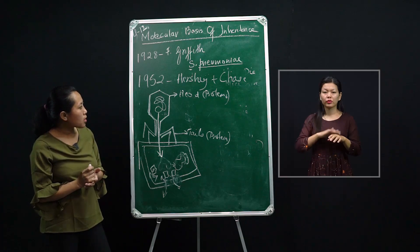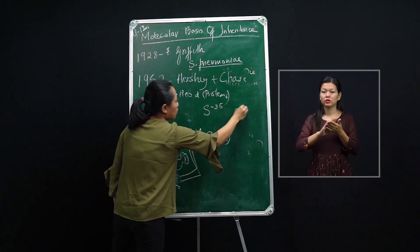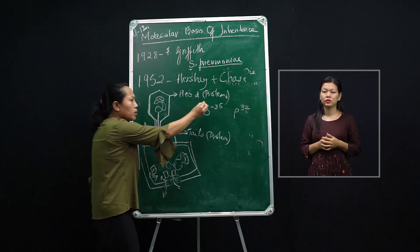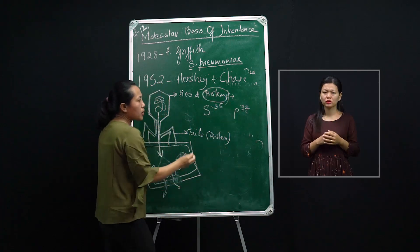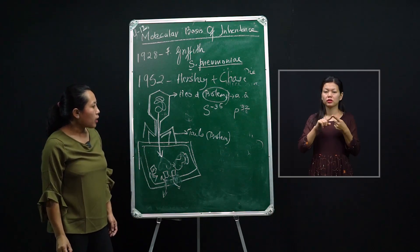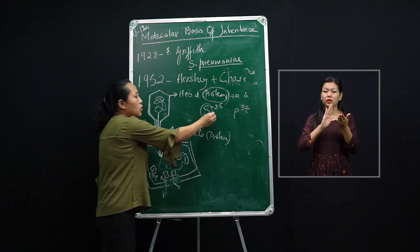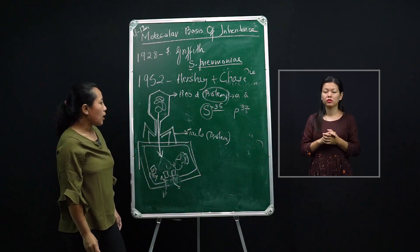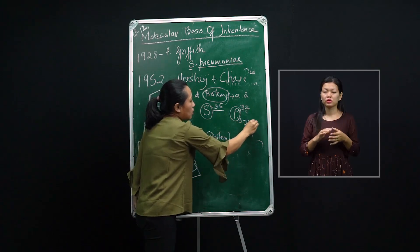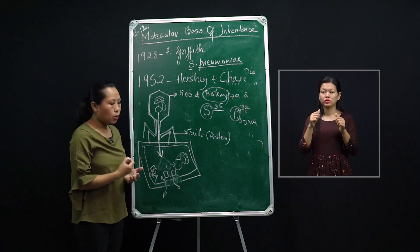In the experiment, Hershey and Chase used radioactive sulfur and radioactive phosphorus. They used radioactive sulfur because proteins are polymers of amino acids, and sulfur is a constituent of amino acids — methionine and cysteine. They used radioactive phosphorus because phosphorus is a component of DNA. They took two cultures of viruses: one grown in a medium containing radioactive sulfur, and the other containing radioactive phosphorus.